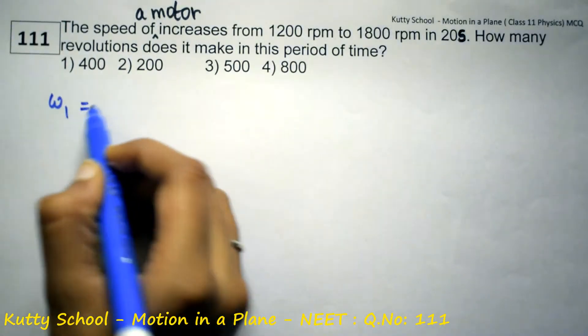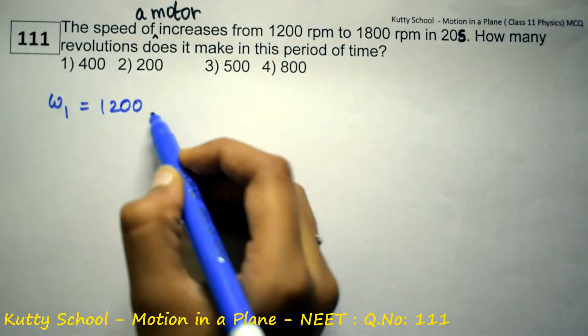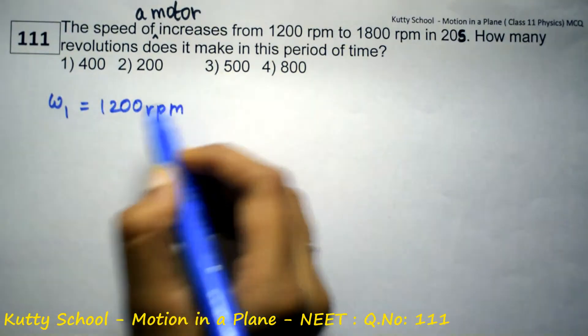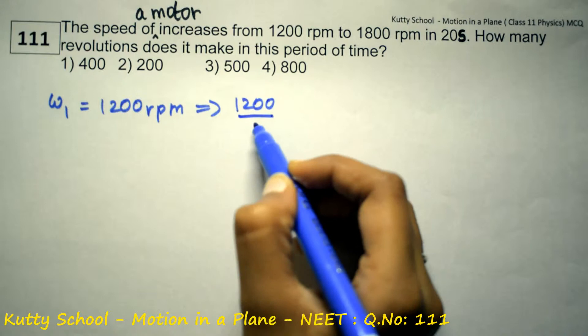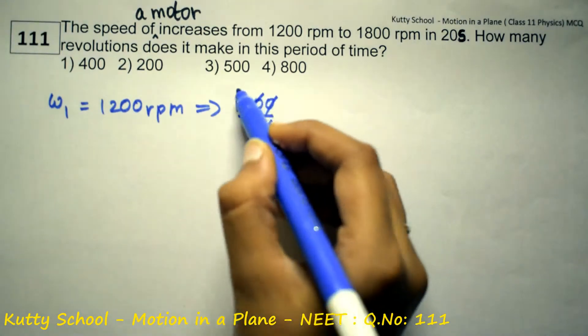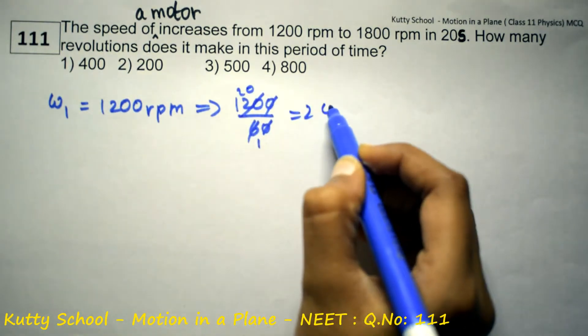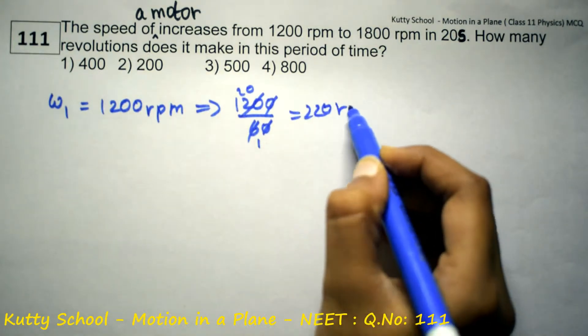Omega 1 is equal to 1200 rotations per minute. So, if we convert, 1200 by 60, which will become 20 rotations per second.